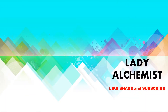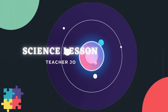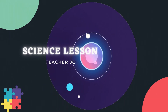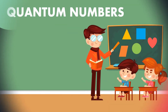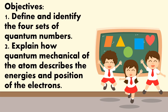Welcome back to Lady Alchemist's YouTube channel. Please don't forget to like, share and subscribe. For today's video lesson, we are going to discuss the quantum numbers. The objective of this lesson is to define and identify the four sets of quantum numbers and explain how the quantum mechanical model of the atom describes the energies and position of the electron. So without further ado, let's get started.